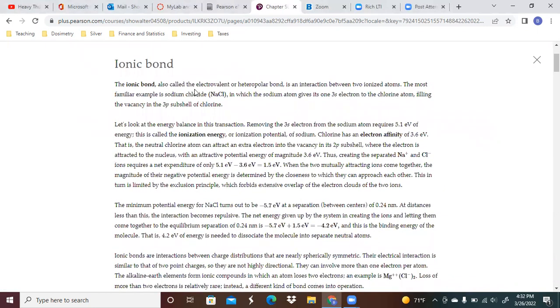The ionic bond, also called the electrovalent or heteropolar bond, is an interaction between two ionized atoms. The most familiar example is sodium chloride or table salt, in which the sodium atom gives its one 3s electron to the chlorine atom.